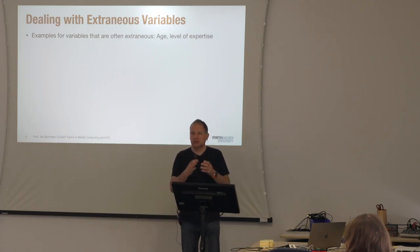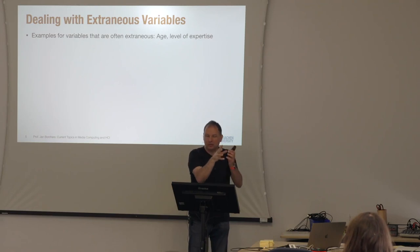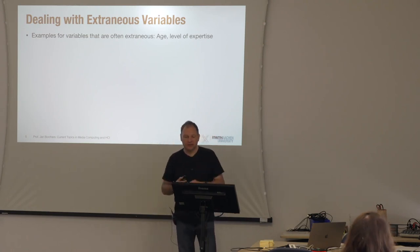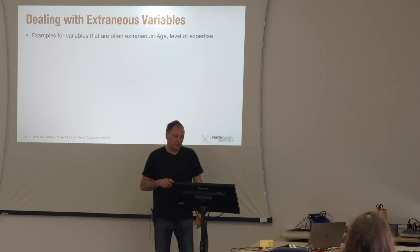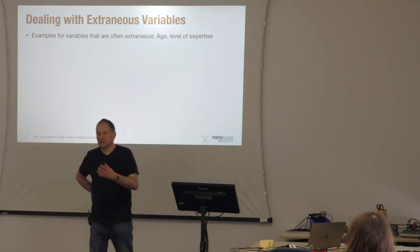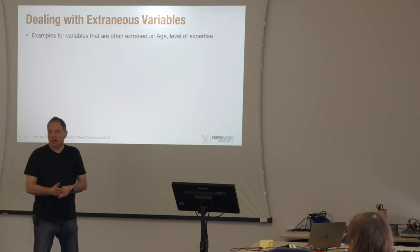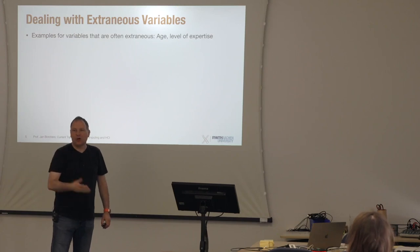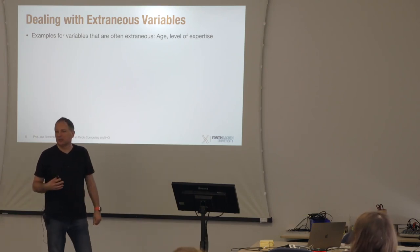Another option is to select people with a similar level of expertise — for example, only testing with computer science students who all have lots of programming experience. That holds the variable constant. But the most common approach is to randomly assign people across conditions and hope the effects cancel out. If the effect of the extraneous variable isn't overshadowing your main effect, you should be okay.